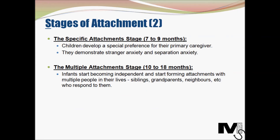The next stage is the specific attachment stage, occurring from seven to nine months — quite important. At this stage children develop a special preference for their primary caregiver. They demonstrate stranger anxiety and separation anxiety. When an infant becomes quiet or hides behind the primary caregiver upon encountering a stranger, they are demonstrating stranger anxiety. When a child demonstrates distress even with a momentary separation from the caregiver, they are demonstrating separation anxiety. These are key features of this important stage.